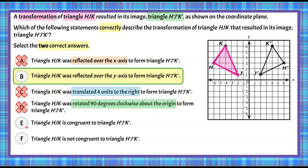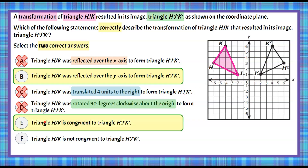Let's look at answer choice E: triangle HJK is congruent to triangle H'J'K'. Since we've identified that the image is a reflection of the original figure, we know it must be congruent — all reflected images must be congruent to the original. Therefore, our second correct answer is answer choice E.